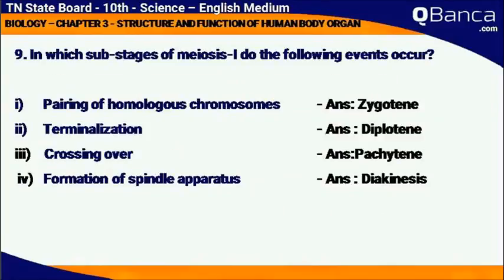In which substage of meiosis 1 would the following events occur? Pairing of homologous chromosomes: Zygotene. Terminalization: Diplotene. Crossing over: Pachytene. Formation of spindle apparatus: Diakinesis.